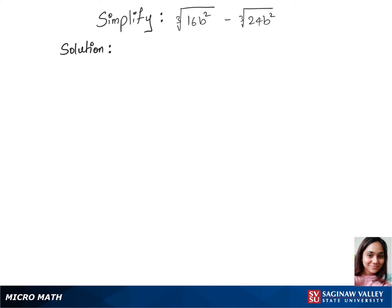Let's simplify this question. We'll first spread the terms under the cubic root. So our first term will be cubic root of 16, which can be written as 8 times 2 times b squared.